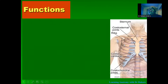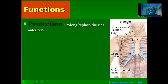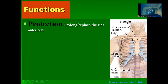Let's look at the functions of these costal cartilages. They present a protective function, so they are involved in the protection of the thoracic organs. As established in previous lectures, the thoracic cage helps to house the thoracic cavity, which contains a number of organs. The costal cartilages form part of the structural component of the thoracic cage, so they are also involved in this protection.